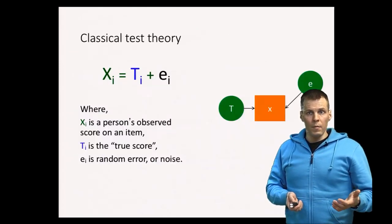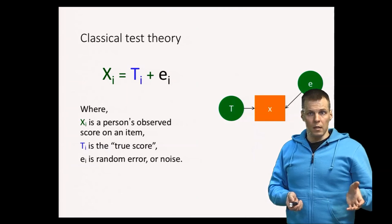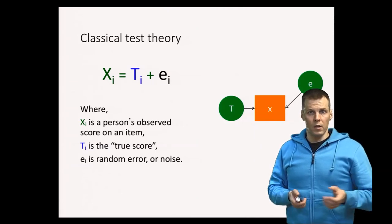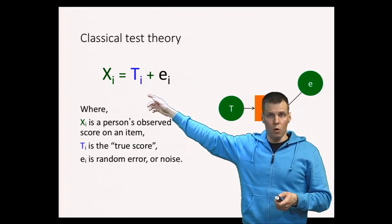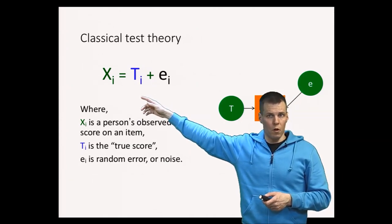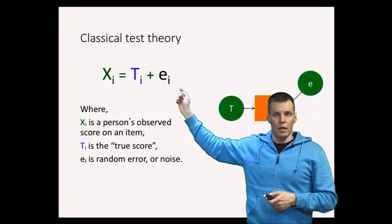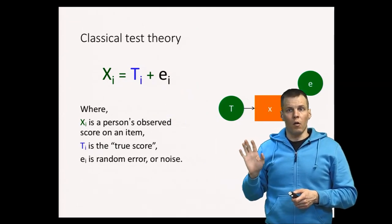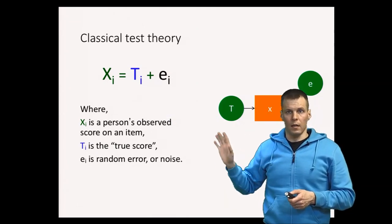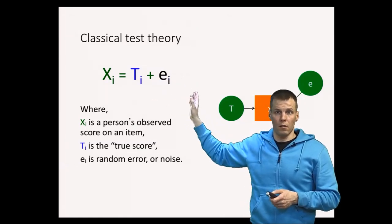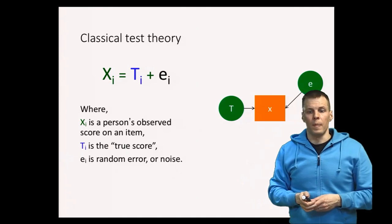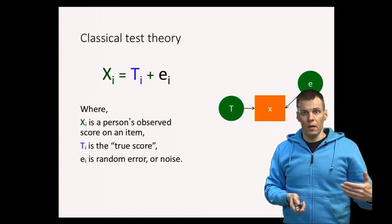The reliability concept comes from classical test theory, and the classical test theory is basically this equation here. The idea is that the measured score X is a sum of true score T plus some random noise e, and the only thing that is the measurement error here is random noise, so there's no systematic error here. So it's a very simple theory and it gives us the definition of reliability.